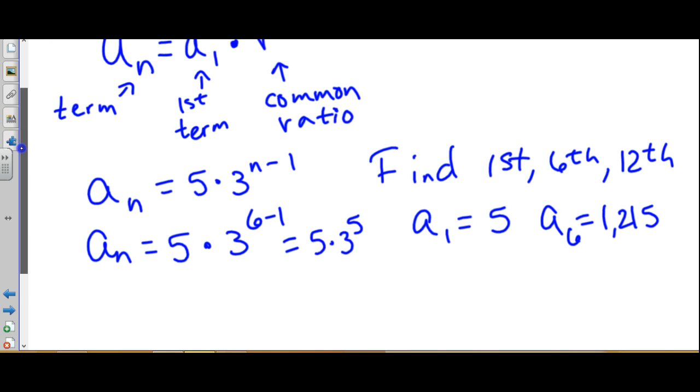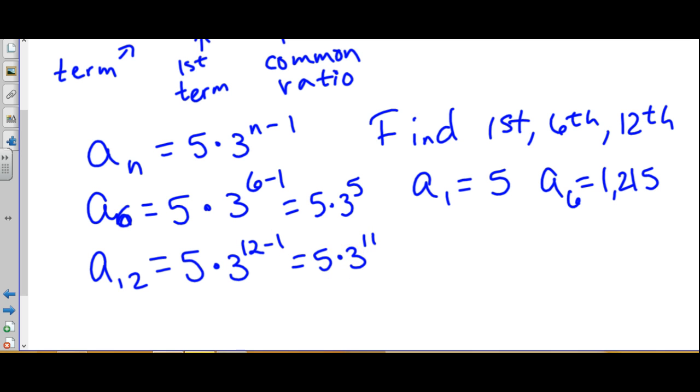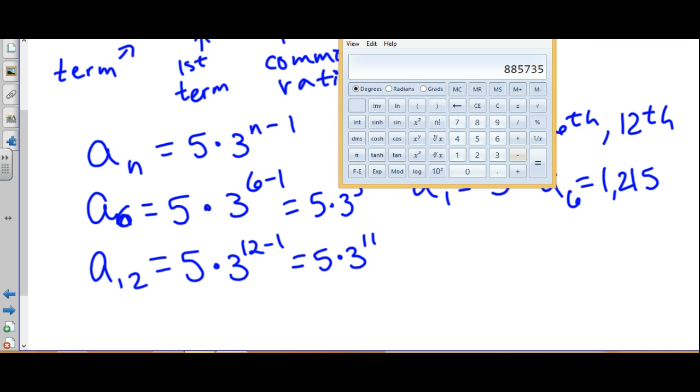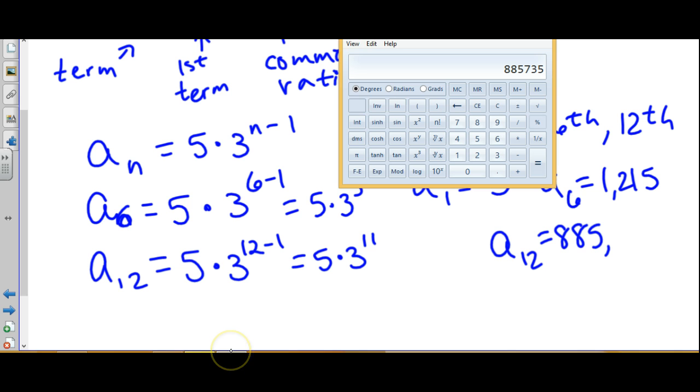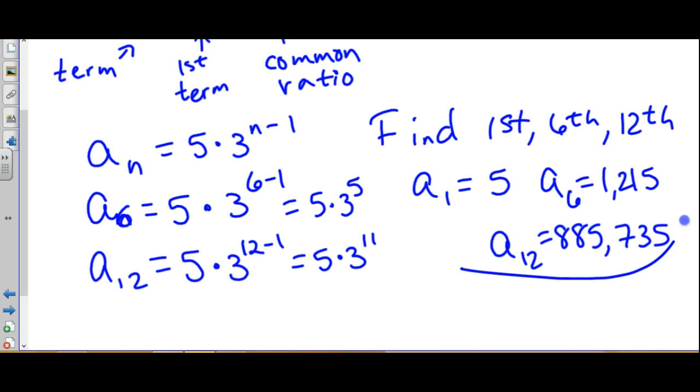Now we find the twelfth term. I really should have put a sub 6 here since we're finding the sixth term. A sub 12, because we're finding the twelfth term, is 5 times 3 to the 12 minus 1. Do the subtraction first, and then plug it into a calculator. 5 times 3 raised to the 11th is 885,735, and there's your three terms.